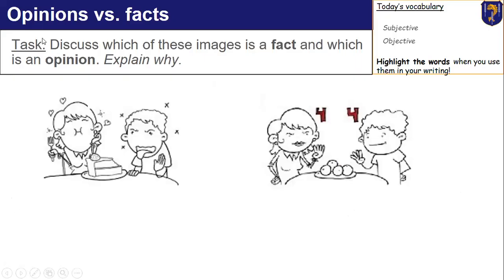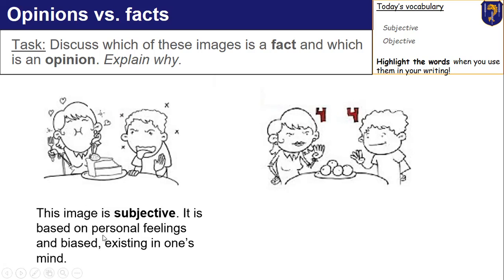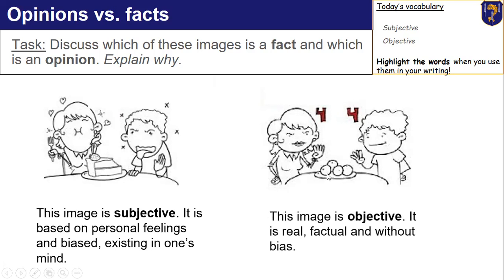The crucial difference we need to look at is between fact and opinion — or these two keywords: subjective and objective. So of these two images, I want you to think about which one is subjective and which one is objective. This one is subjective — it is based on personal feelings and bias existing in one's mind. As you can see, this person really likes cake, this person does not, therefore it makes it subjective. Whereas in this one, they both agree on the same thing because there are four oranges — it is factual and without bias.